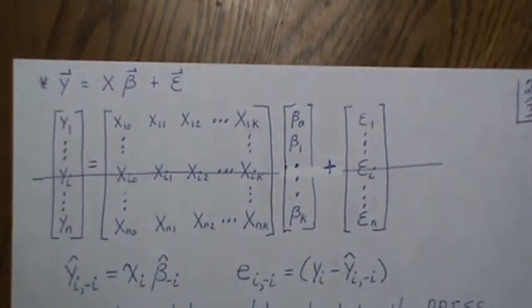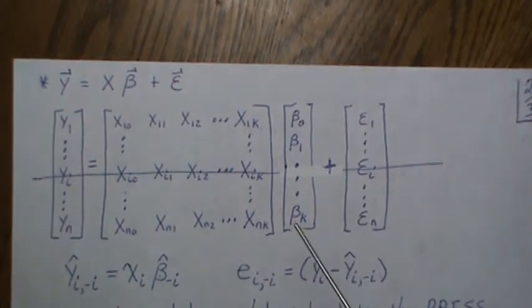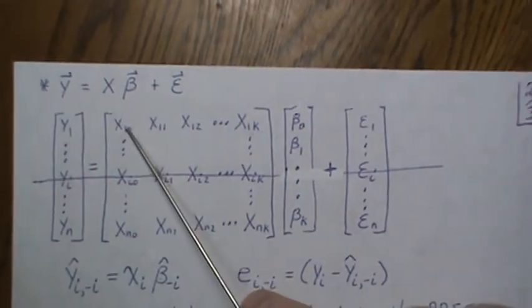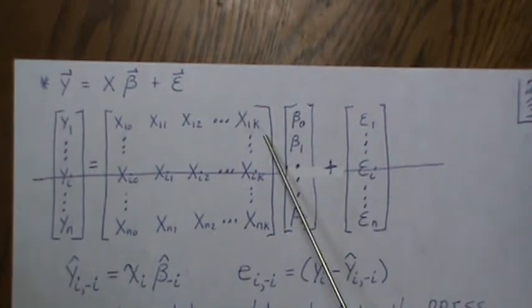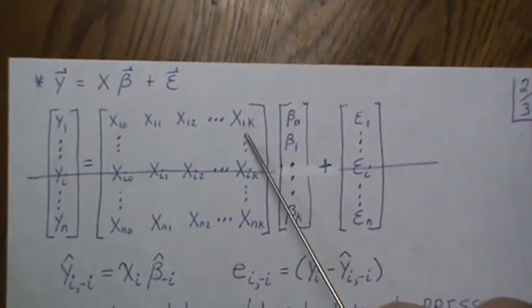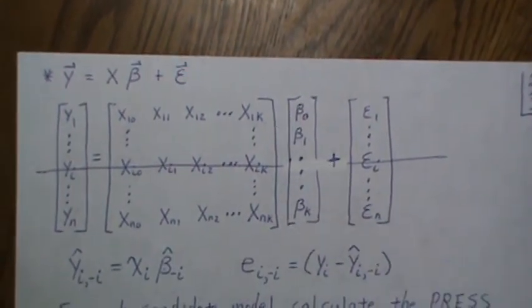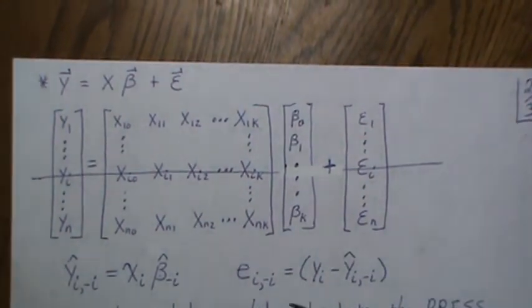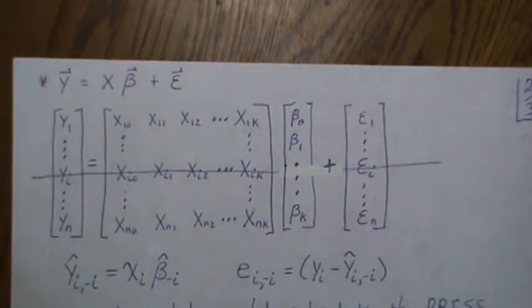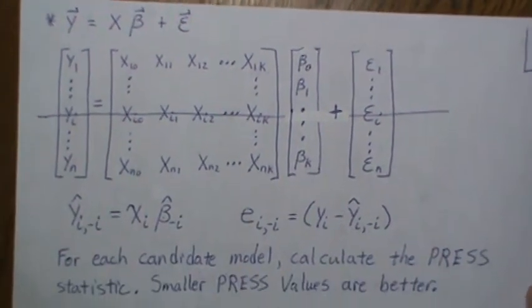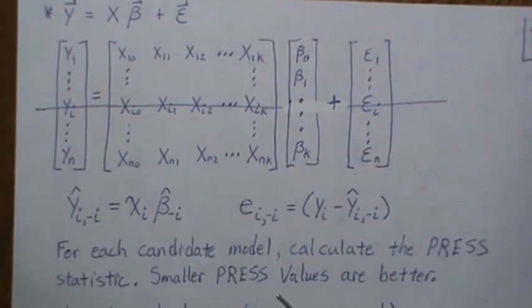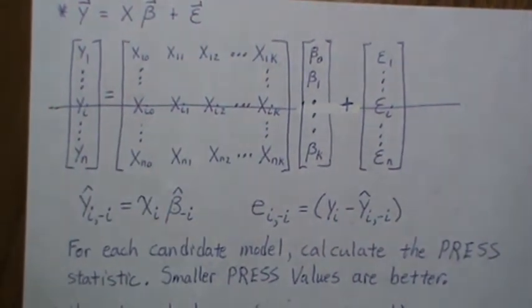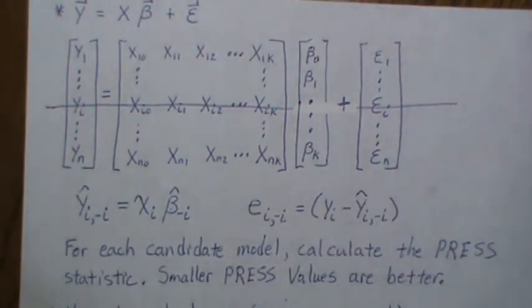We use the PRESS statistic to compare candidate models. With many predictor variables available, we might test models with K minus two predictors, K plus three predictors, and so on. For each candidate model we can calculate the PRESS statistic using n-fold cross-validation. It turns out that smaller PRESS values are better, and we can use that in our model selection process.